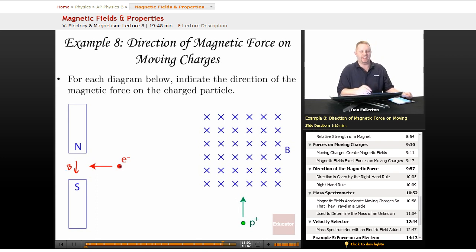Then we're going to take our left hand, because it's a negative charge, and point the fingers of your left hand in the direction of the particle's velocity, bend them down in the direction of the magnetic field, and you should find that your thumb is going to point into the plane of the page of the screen.